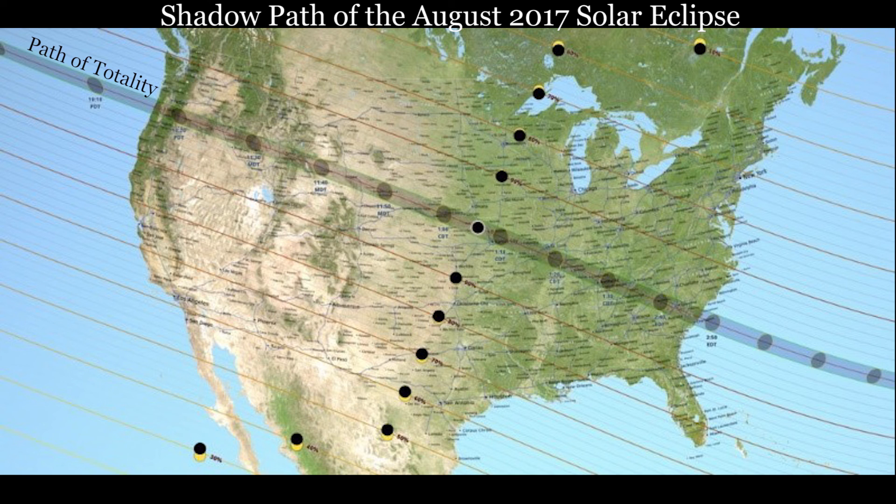Others, not in the path of totality, will see a partial solar eclipse if they are in the penumbra, or no eclipse at all if they are not in the shadow of the moon. In the August 2017 eclipse, the path of totality was roughly 70 miles across.